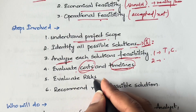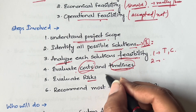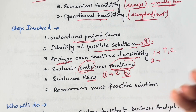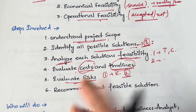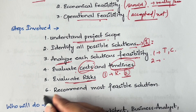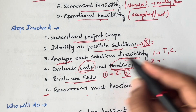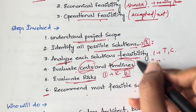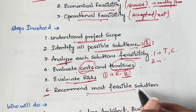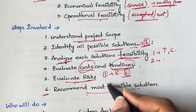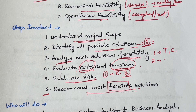Next, evaluate the risks associated with each solution — what could the possible risks be if you go with solution one, solution two, and so on. Finally, based on cost, timeline, and risks, you select the most feasible solution — the most reliable and worthwhile option. That is why the word 'feasible' is used.